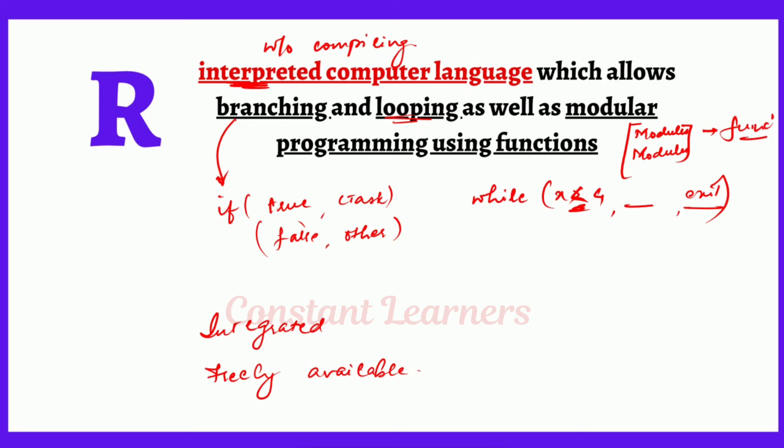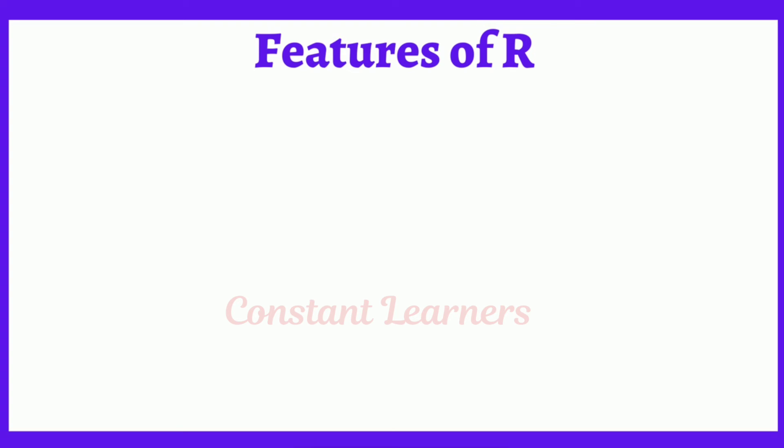Now if you remember these points, we can easily write the features of R. In short, we will see what are the features of R. The first point can be R is a very well-developed language. It is a well-developed language. It is very simple. The second point could be it is simple yet very effective programming language.